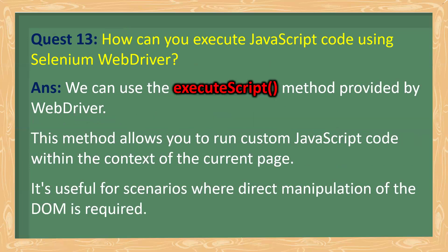How do you execute JavaScript code using Selenium WebDriver? We can use the executeScript function, which is available in the JavascriptExecutor interface provided by WebDriver. This method allows you to run custom JavaScript code within the context of the current page, and it is useful for scenarios where direct manipulation of the DOM is required — for example, scrolling the page, though Selenium now has a dedicated scroll method.